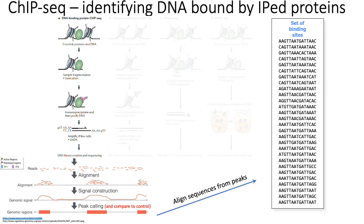On the other hand, for lack of a better word, you have more modern in vivo techniques like ChIP-seq, whose primary goal is to identify in vivo DNA sequences bound by particular transcription factors.